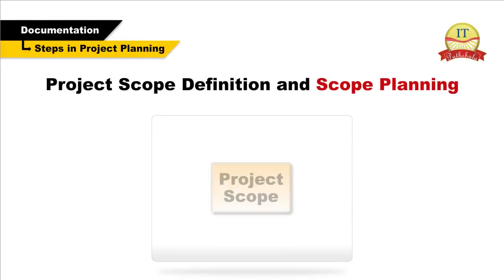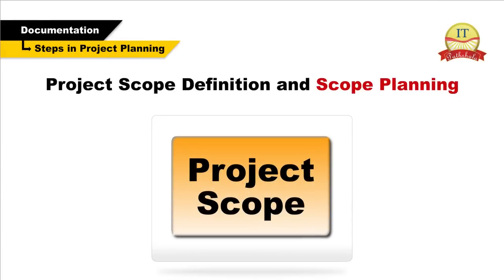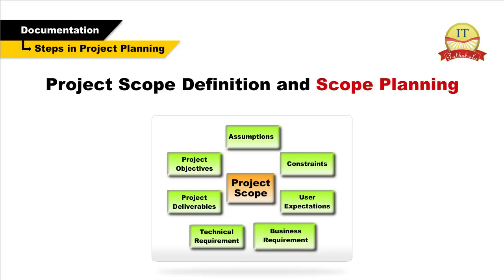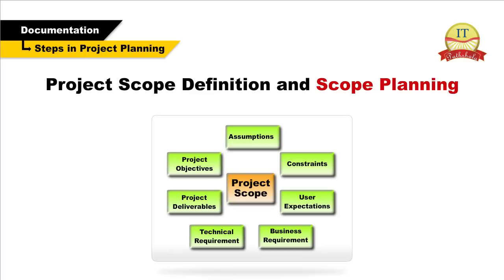We will now discuss the steps in project planning in depth. Project scope definition and scope planning: in this step, we document the project work that would help us achieve the project goal. We document the assumptions, constraints, user expectations, business requirements, technical requirements, project deliverables, project objectives, and everything that defines the final product requirements. This is the foundation for a successful project completion.